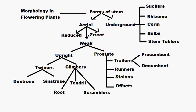Underground stem can be classified into five types: suckers, rhizome, corm, bulbs, and stem tubers.